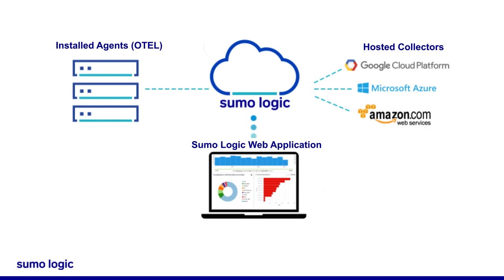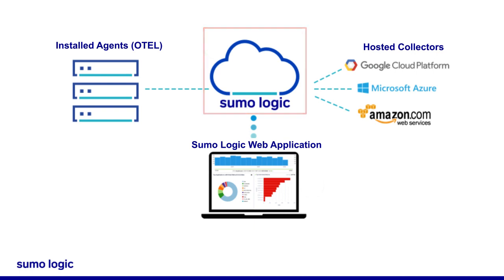Cloud-based sources include AWS, Azure, and Google Cloud Platform. These collectors will send logs, metrics, and traces from all sources to the Sumo Logic cloud, a secure, scalable repository that stores, indexes, parses, and analyzes your data.